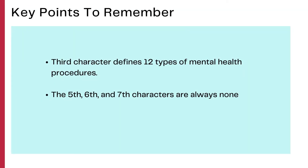Key points to remember: there are 12 types of mental health procedures for the third character value, which make up most of the procedures in this section. The fifth, sixth, and seventh characters are always none in the mental health section.